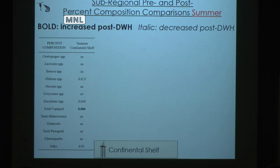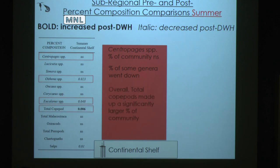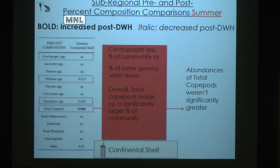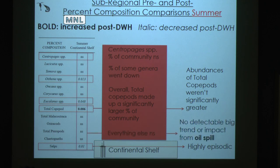Looking at summer — when the spill occurred, with oil present in the water column in 2010 — centropages didn't actually change in percent composition between pre and post. Some individual copepod groups went down, but total copepods went up. Again, these abundances weren't significantly different, so it doesn't seem to be a consistent signal and we can't rule out natural variability. Salps did significantly decrease post-spill, but as mentioned, they're really episodic animals that respond very quickly, and it's very hard to say that a salp catch represents an average signal given their lifestyle. Everything else was not significantly different. Again, no big trends to indicate that the oil is significantly impacting the system.